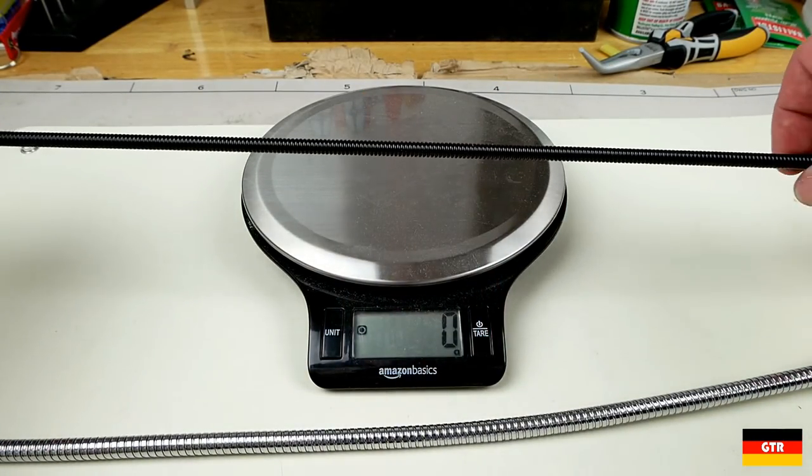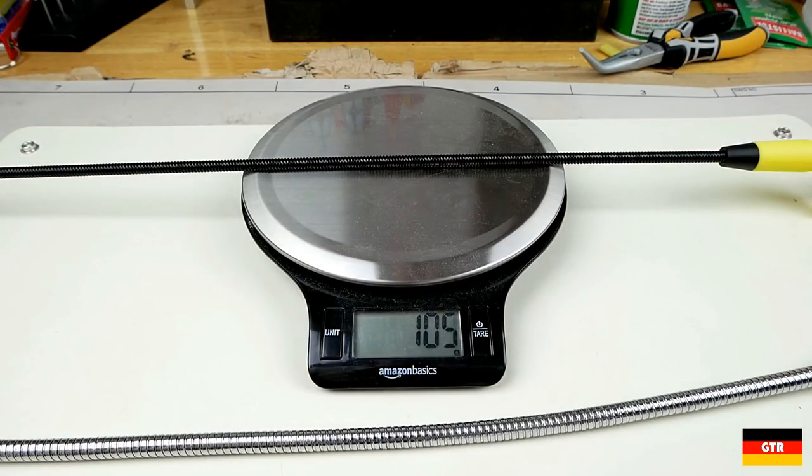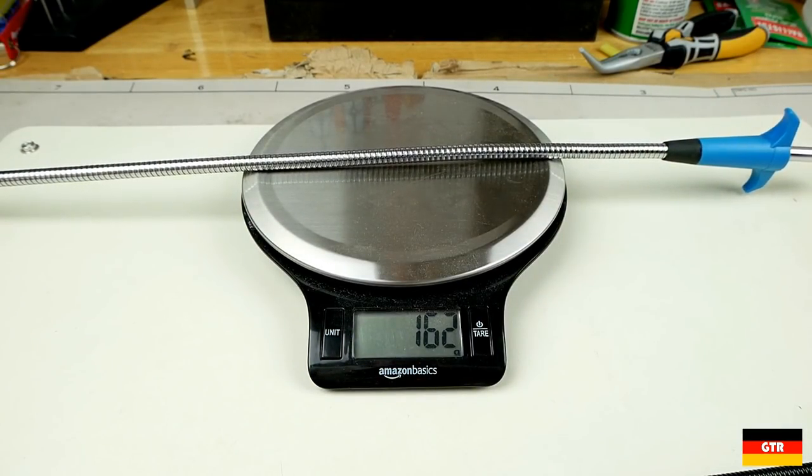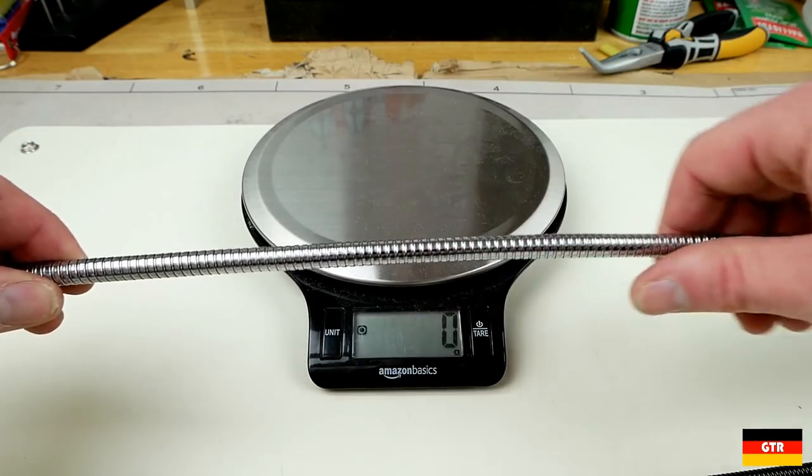One thing I want to show you guys is the weight difference here. Look at the cheap one, it's 105, 104 grams. The Gedore one, 162 grams. So I think a lot of that is the sleeve that's on there.